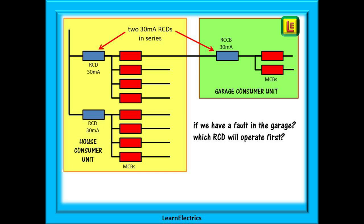If a residual current fault happens in the garage which RCD device will operate first? If it is the house RCD then all that part of the house will lose power and this is not correct coordination.